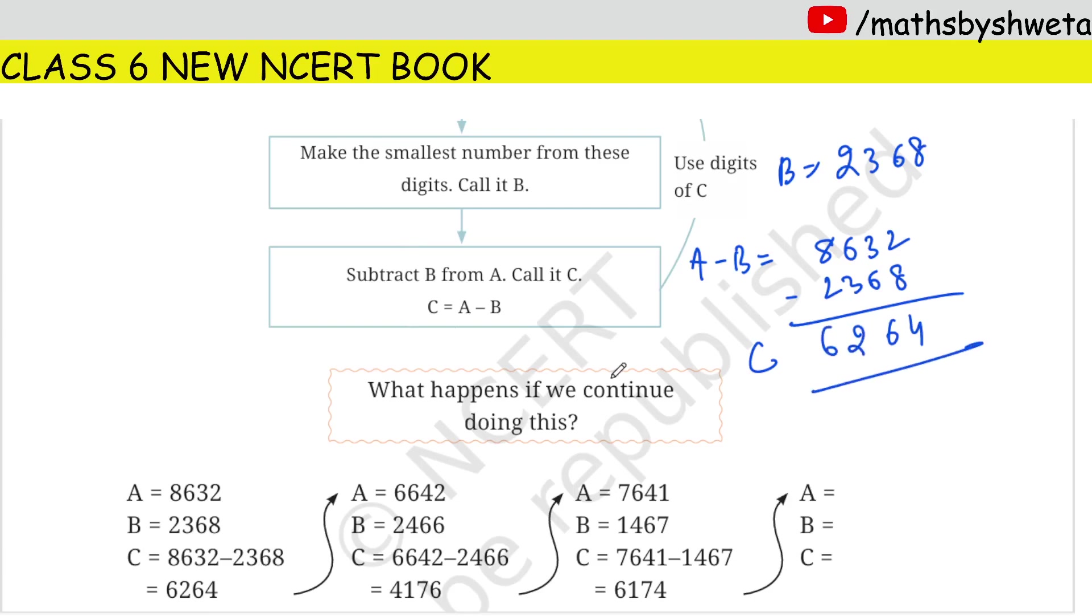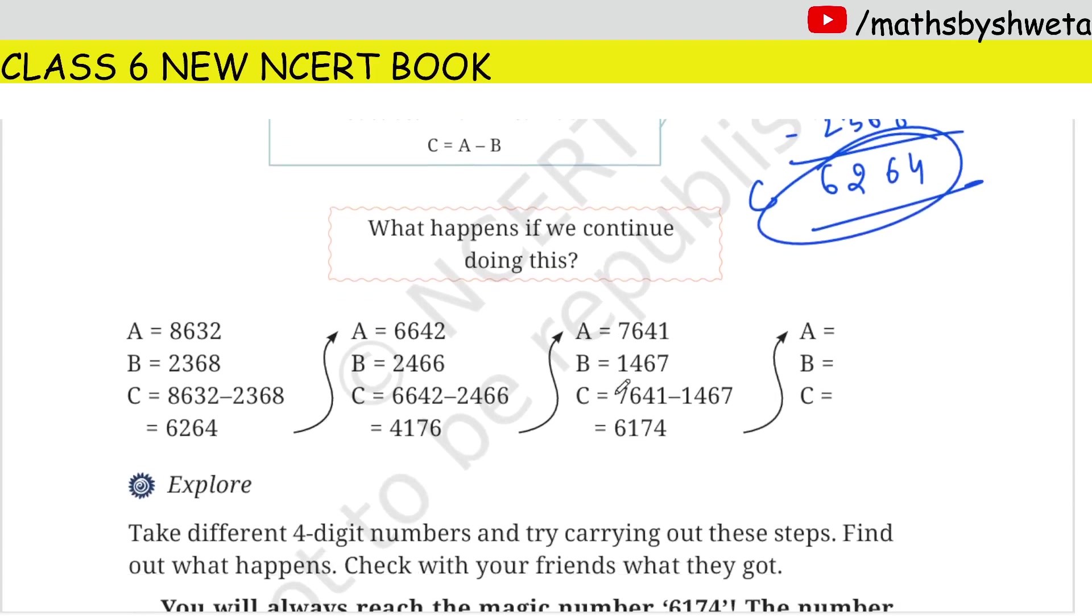Now what happens if we continue doing this? Do it again. A 4 digit number you get. Now this same number, from this largest number, one smallest number.